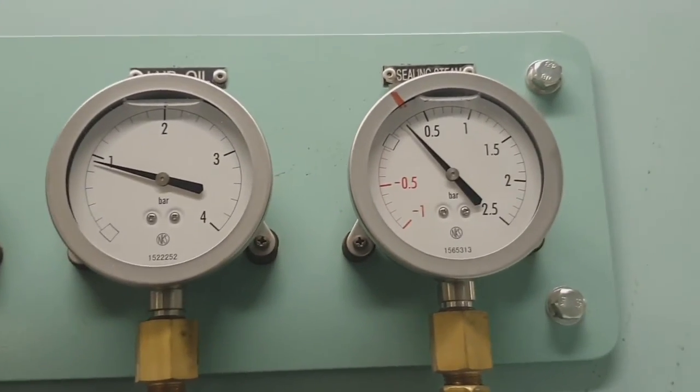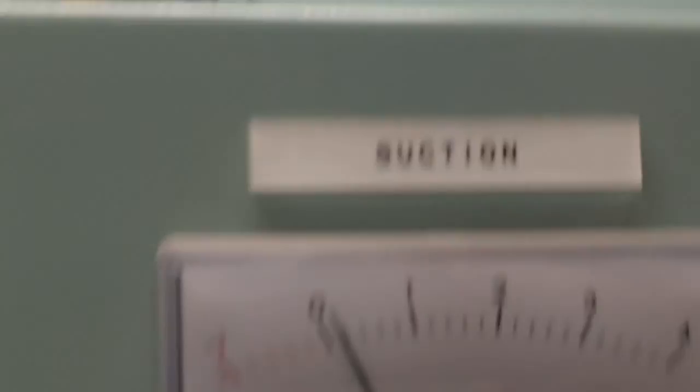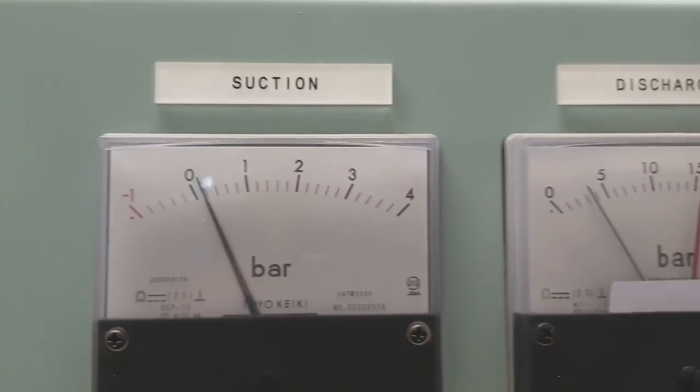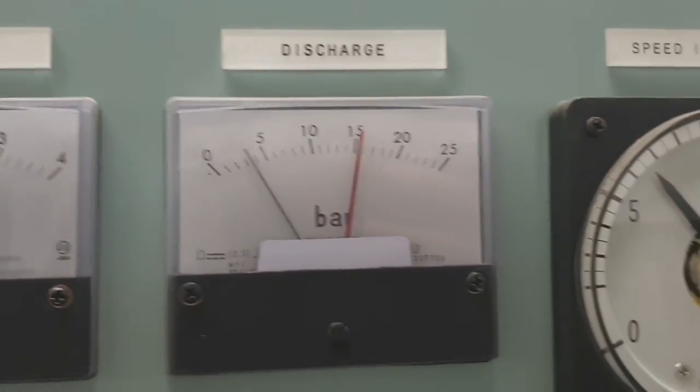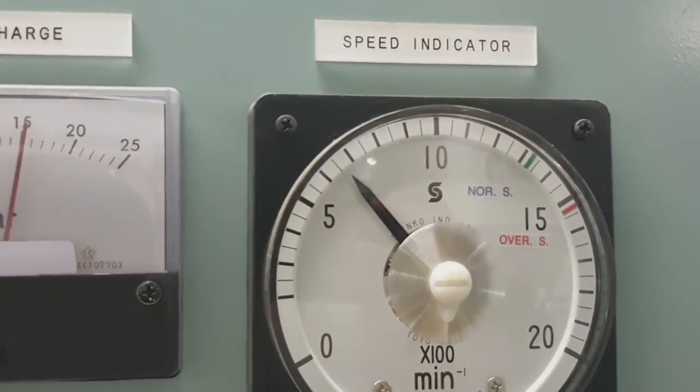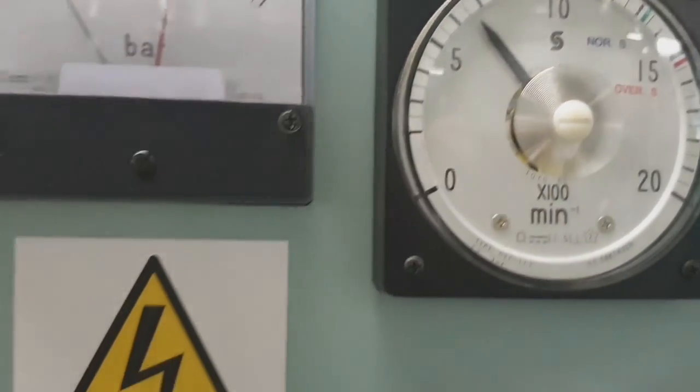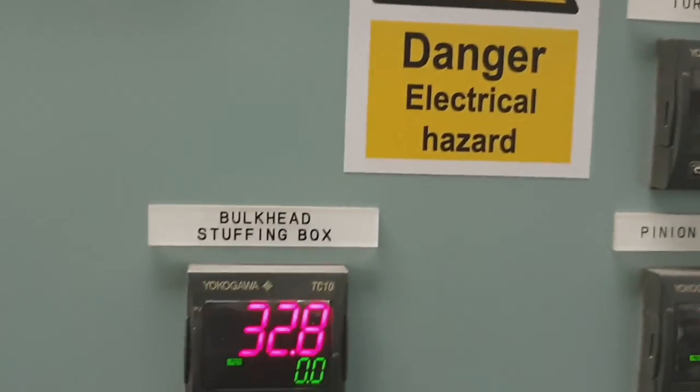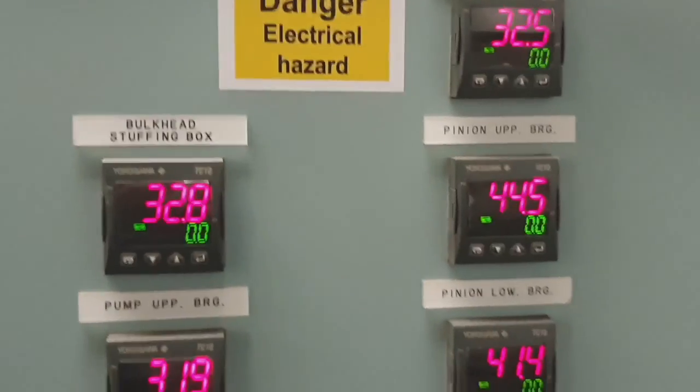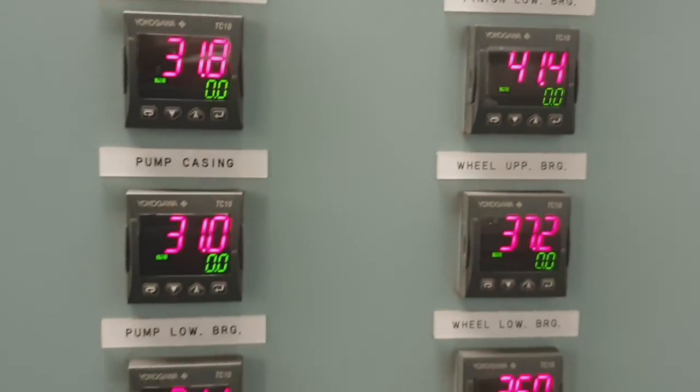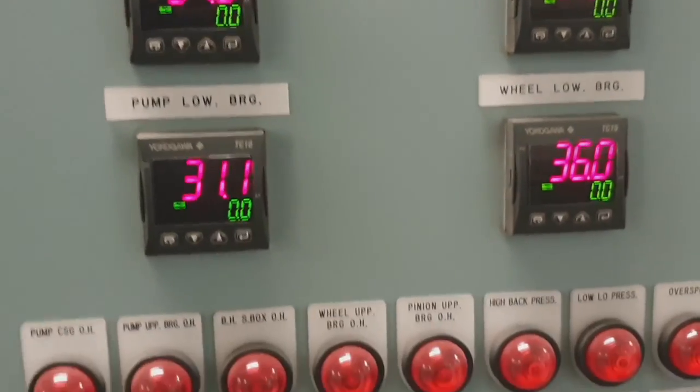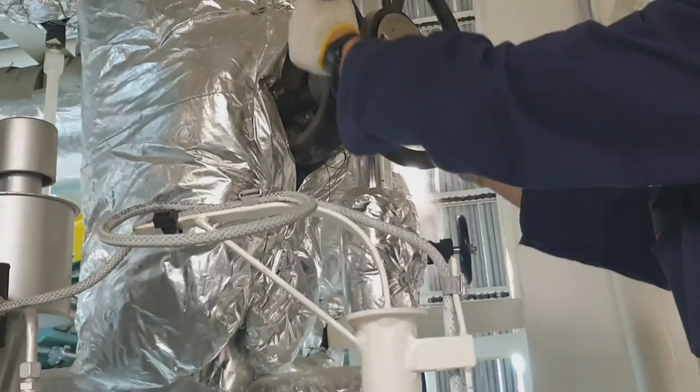These are all the parameters that need to be monitored when the cargo pump is in operation. This is the speed indicator showing the RPM, and these are the monitors displaying the temperatures of all bearings and stuffing box.